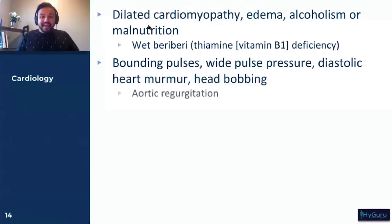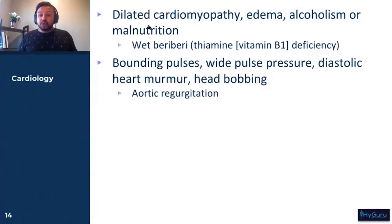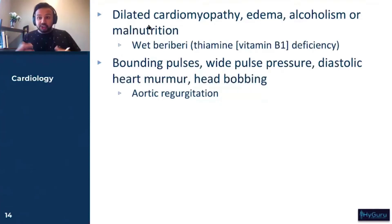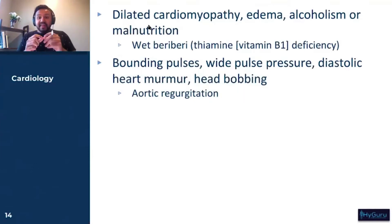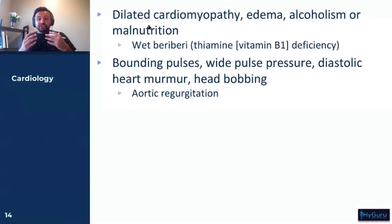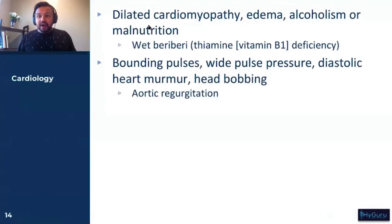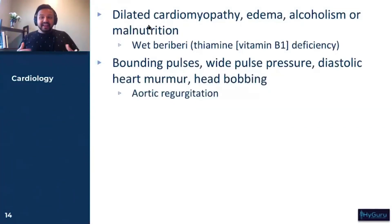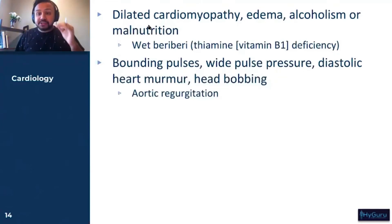This one is aortic regurgitation. Aortic regurgitation — watch for this murmur that is heard best at the right second intercostal space. You may see a Marfan's patient in your test question because the connective tissue defect can give them aortic insufficiency. The wide pulse pressure is due to regurgitation causing increased preload. This is a diastolic heart murmur because the aortic valve should be closed in diastole, and hand grip will also make this murmur louder.